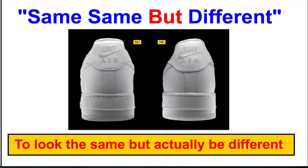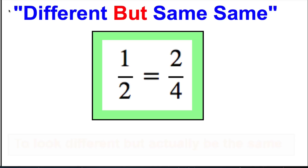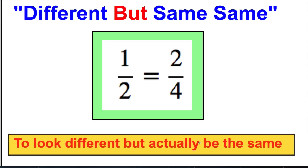Now equivalent fractions are the opposite to this. I like thinking of equivalent fractions as 'different but same same' — by that I mean they actually look different but they are the same. So in this case, a half actually turns out to be exactly the same thing as two quarters. They look different but actually they are the same. This video will show you why that's the case and how to generate these 'different but same same' equivalent fractions.